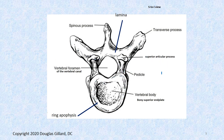From this view we can also see the superior articular processes and the lamina. The vertebral foramen is more round than at other levels — it's really a round hole. So that's also a little weird. We'll see all the weirdness as we keep going through this.